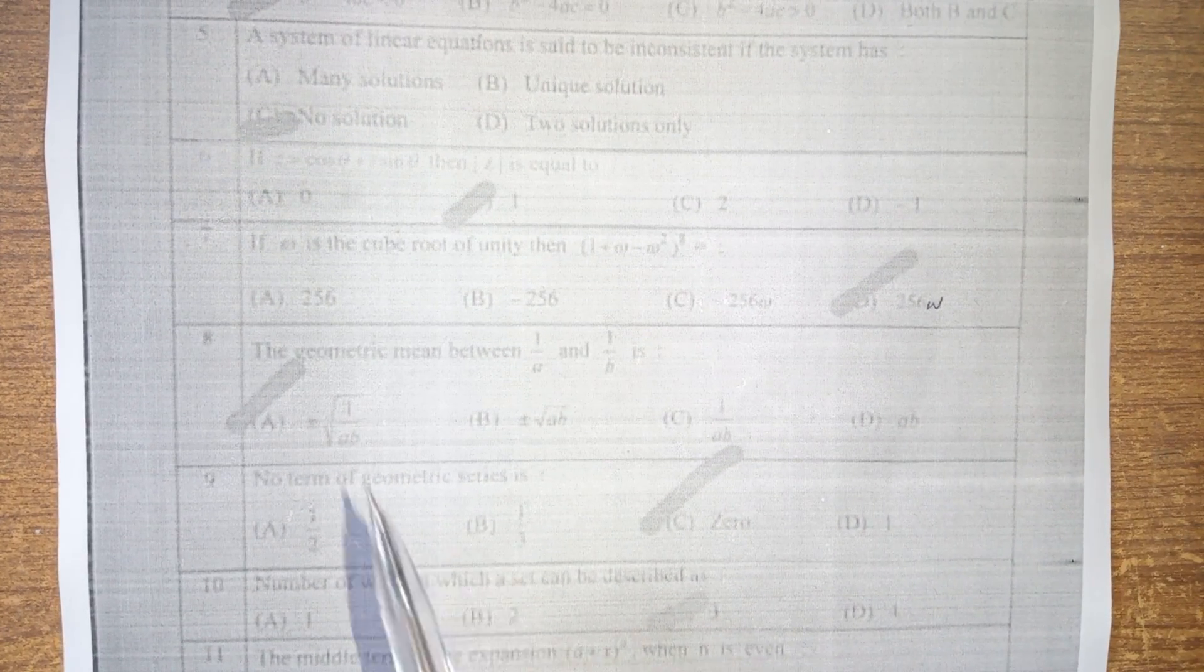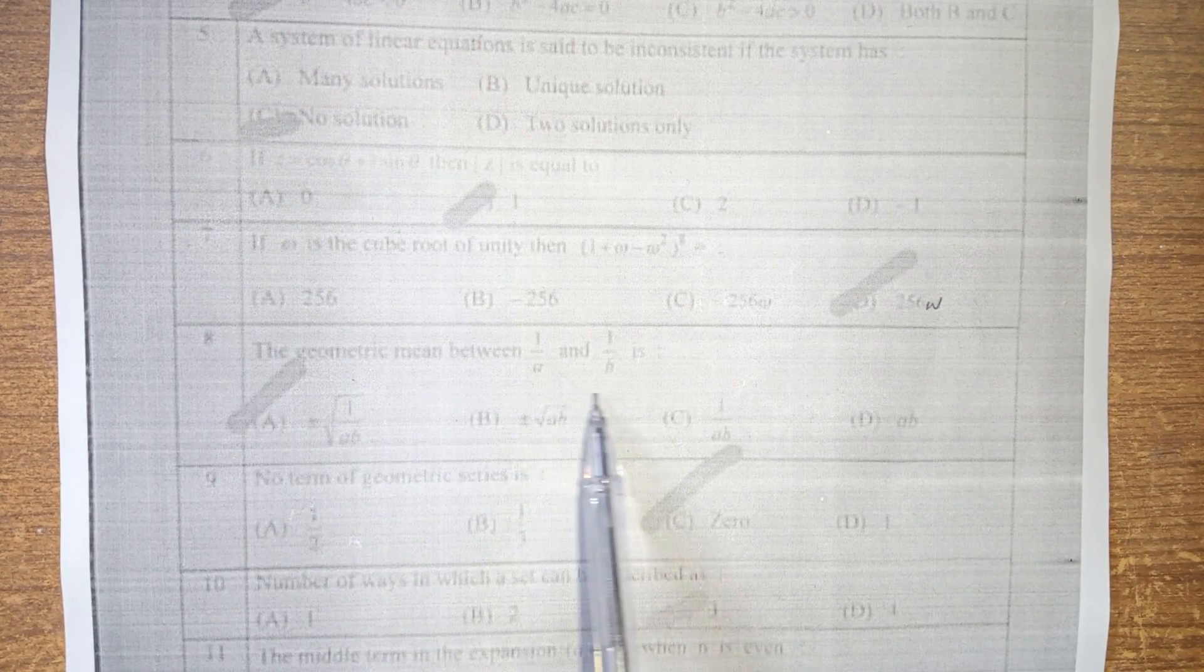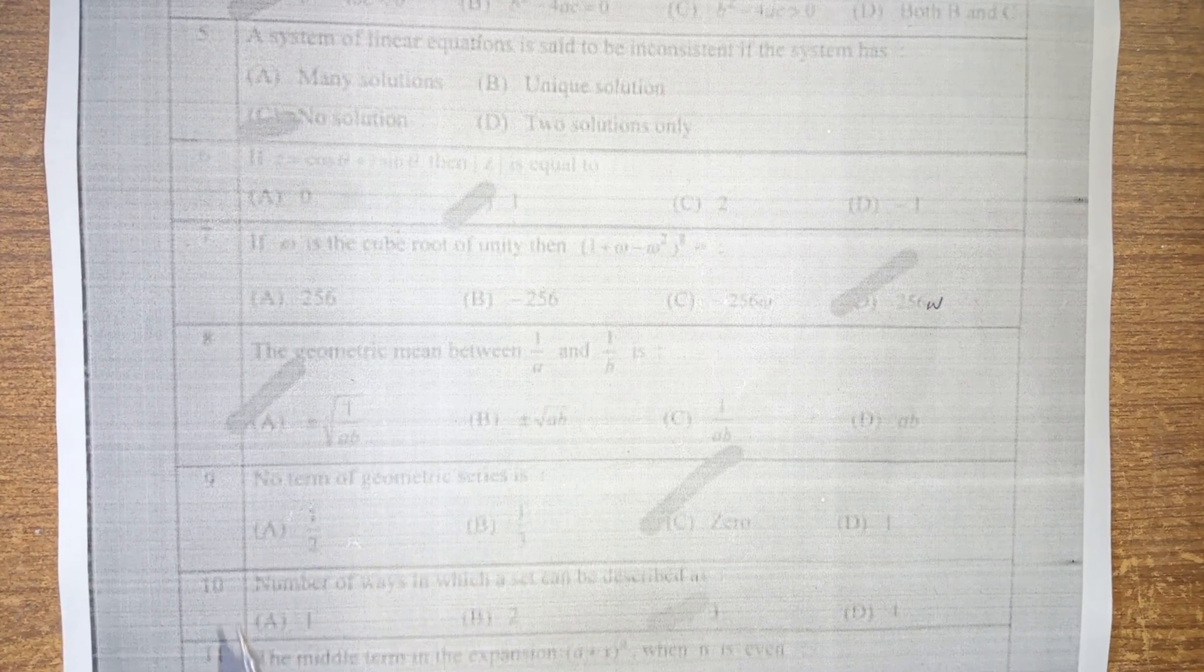After that, the next question is the geometric mean between 1 over a and 1 over b is option 1 over ab under root 1 over ab. And the next question is the term of geometric series, that is 0, option c is the right answer.